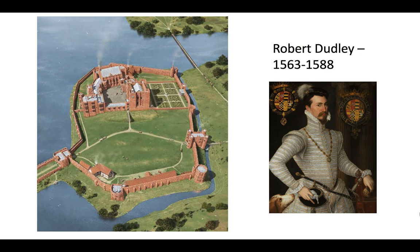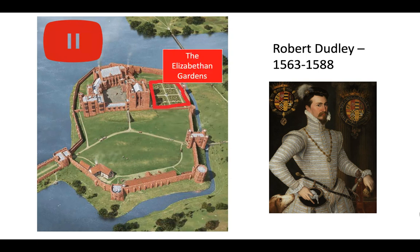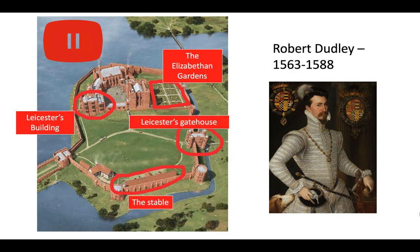Finally we're going to look at the building developments undertaken by Robert Dudley. New features include the Elizabethan gardens, Leicester's building, Leicester's gatehouse and the stable. These are known as Leicester's buildings because Robert Dudley's title is the Earl of Leicester. The stable would have had room for up to 50 horses and tells us how horse riding was a favoured hobby and pastime for the rich and wealthy — horses would have been used for hunting, a particular hobby of Elizabeth I.